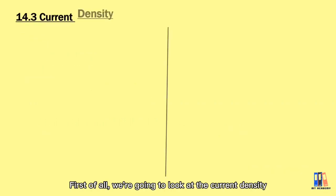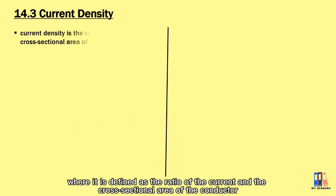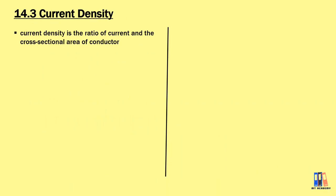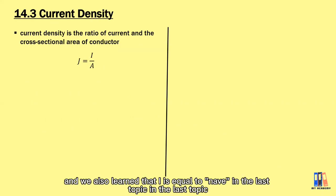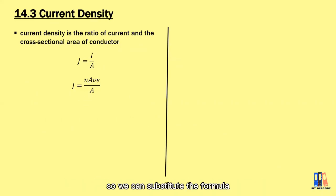First of all we're going to look at the current density, which is defined as the ratio of the current and the cross-sectional area of the conductor. The symbol is given as J and it is equal to I over A. We also learned that I is equal to nAv in the last topic, so we can substitute the formula and express J as nve.